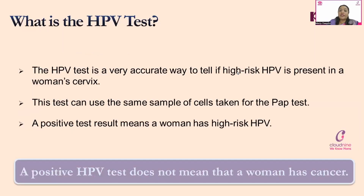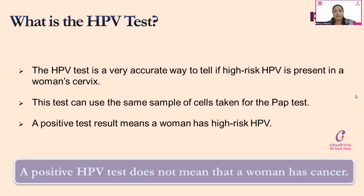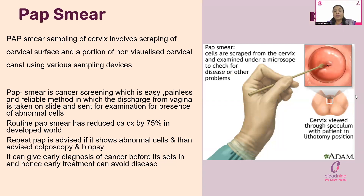Secondary prevention screening tests include the HPV test, Pap smear, Visual Inspection with Acetic Acid, and Visual Inspection with Lugol's Iodine. The HPV test is a very accurate way of telling if high-risk HPV is present in the cervix or not; it can use the same sample taken for the Pap smear. A positive test means a woman has high-risk HPV, but it does not mean she has cancer. The Pap smear involves taking a smear of cells from the cervix using a spatula for histopathological examination.